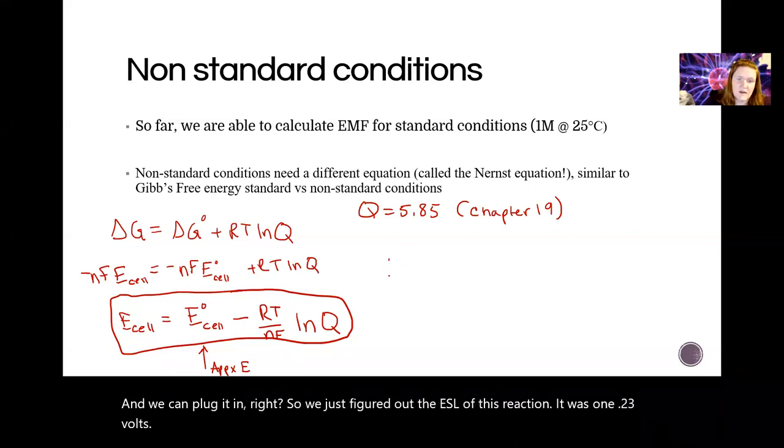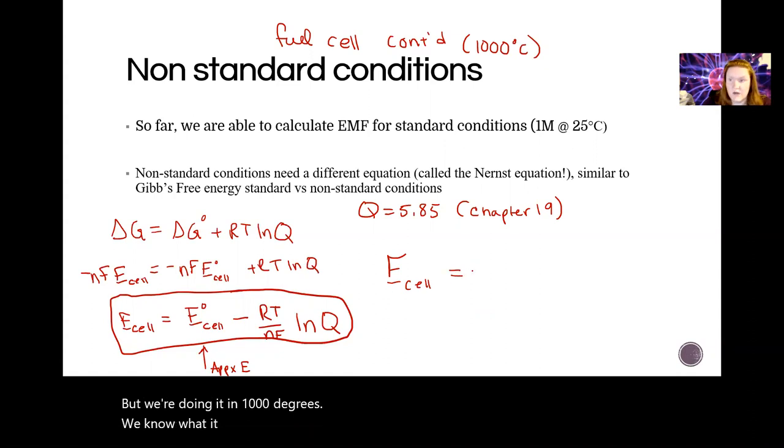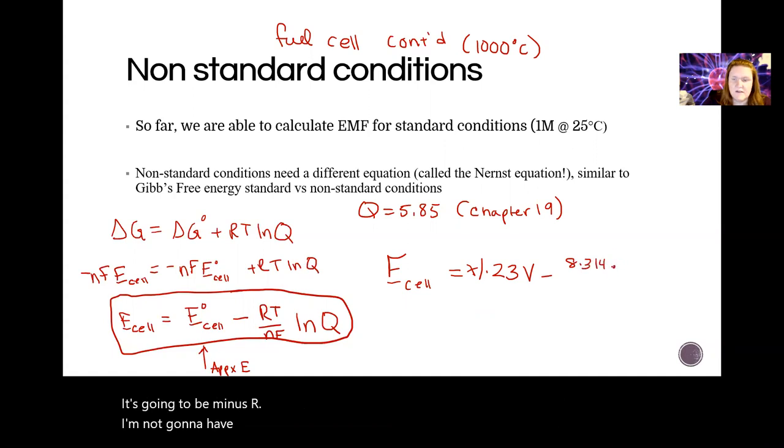It was 1.23 volts. And so let's say we're running it at 1000. So this is your fuel cell example again. But we're doing it at 1000 degrees. Okay, so we want to know what it doesn't get better when it gets hot. You know, that's a good question to find out about any battery. So the E cell is the 1.23 volts that we just measured or calculated. It's going to be minus R. I'm not going to have room to write units. It's a terrible idea to skip them, but I'm going to. Sorry.